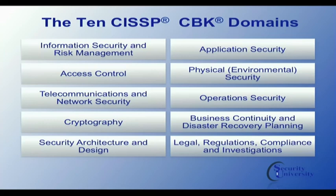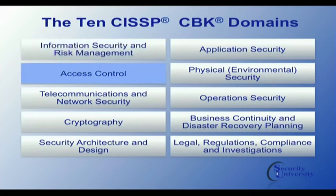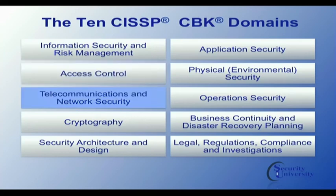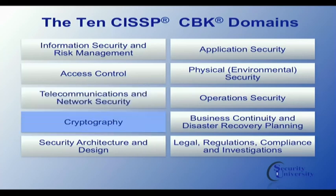Let's take a look at the ten CISSP common body of knowledge domains. First, information security and risk management — sort of the reason why we're doing all this, the cornerstone domain. Access control. Telecommunications and network security, often a daunting topic for those folks who are not regularly involved in the technicalities of operating a contemporary TCP/IP network. Then we hit cryptography in domain four. Cryptography often appears to be magic to many people — we want to help you bring it down to earth and demystify the whole topic of cryptography.